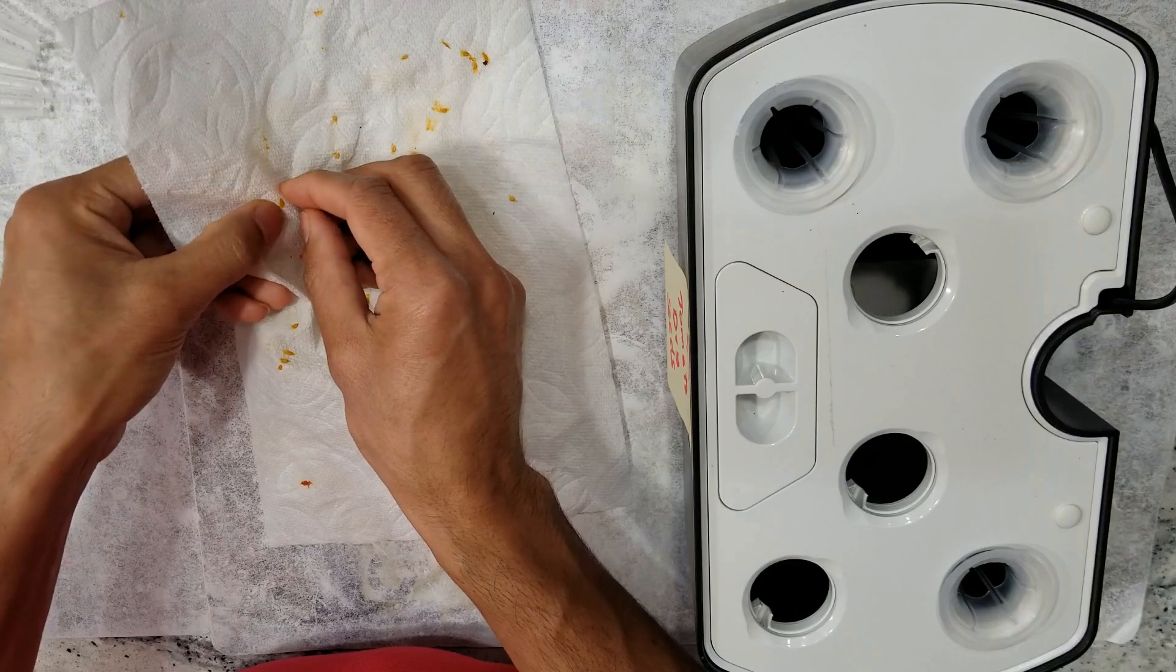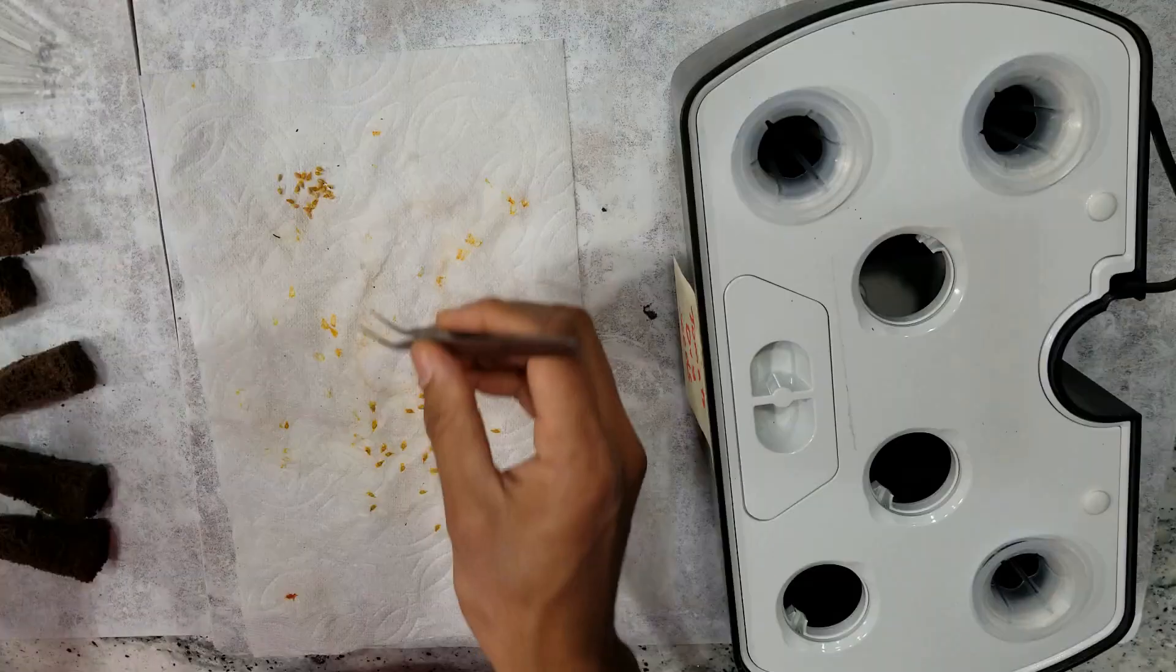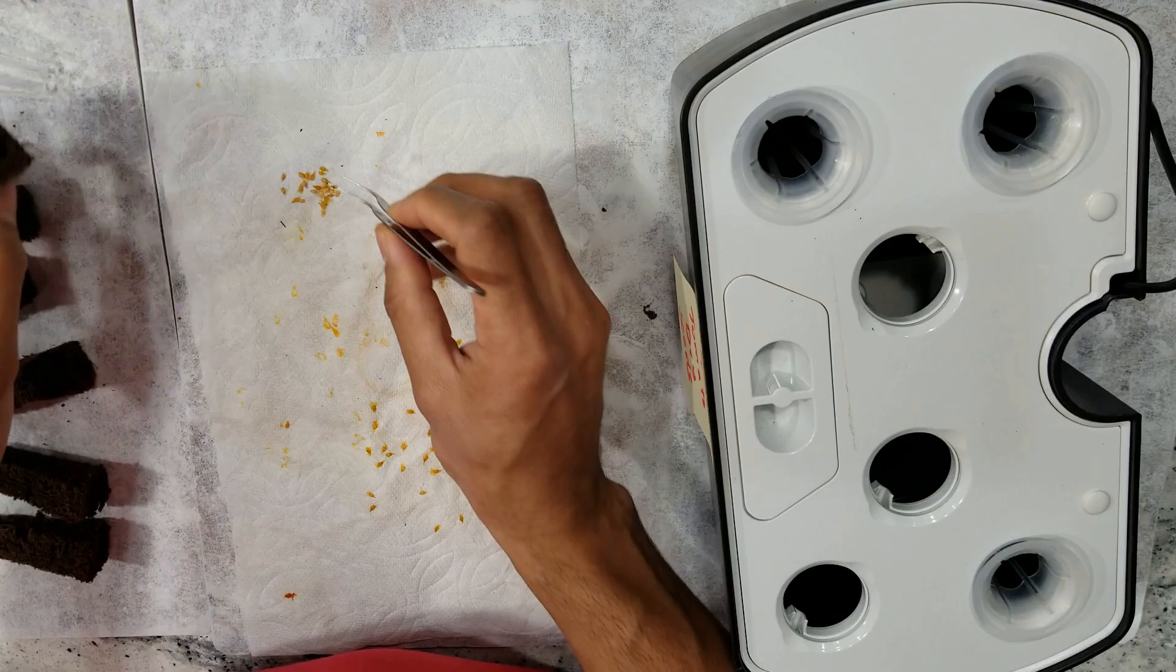Now remove the seeds from the paper towel and store them however you want. It's that simple.